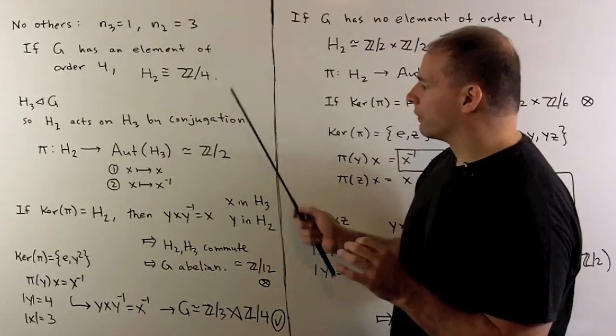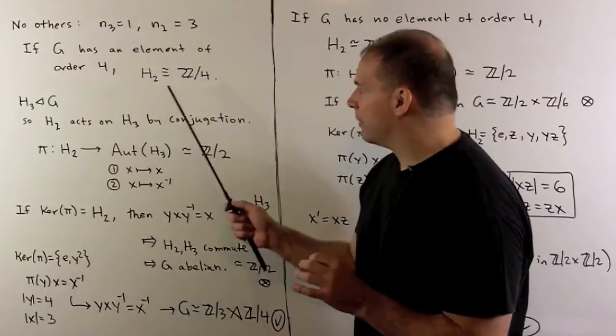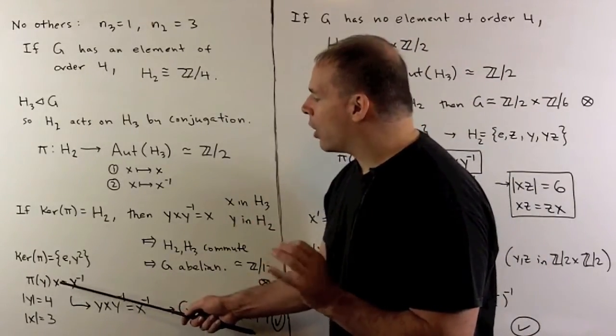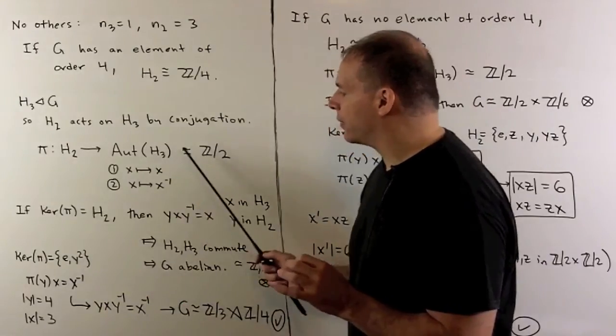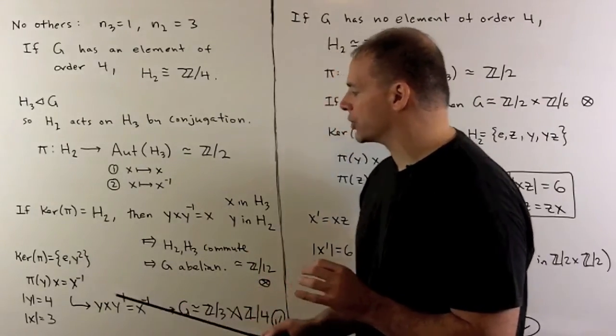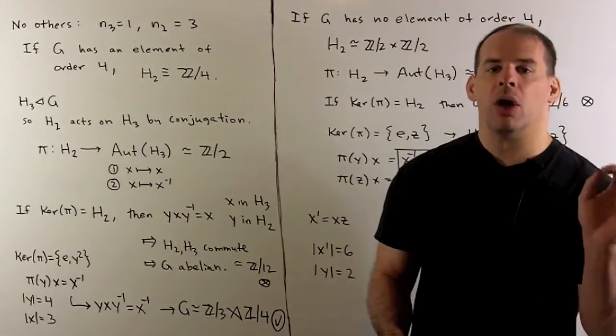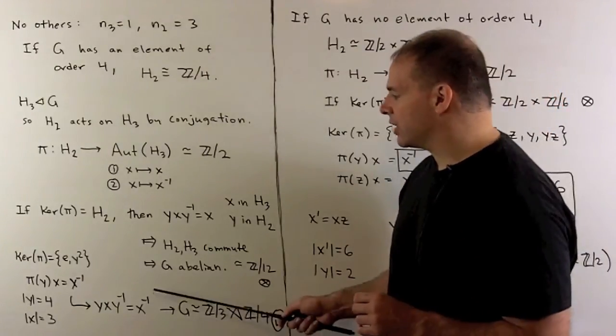So that's going to be an element of order 4 in our Z mod 4. So I'll call that y. And pi y on any element x in our Z mod 3 is just going to equal x inverse. That translates, using conjugation, yxy inverse equals x inverse.